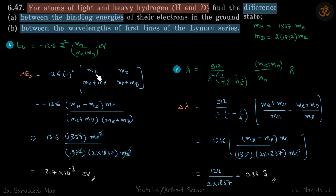Now in the second part, what is the wavelength of first lines of Lyman series for both hydrogen and deuterium? So this is our modified equation for hydrogen.